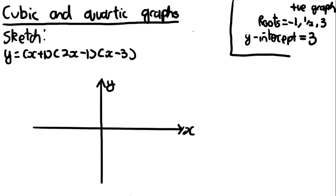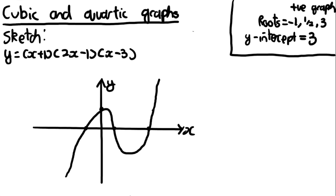Now we have all the information needed to sketch the graph: it's a positive cubic, with roots at x = −1, x = ½, and x = 3, and a y-intercept of 3. Plotting those points and drawing the positive cubic shape through them gives a reasonable sketch. The most important thing is to label everything — the roots −1, ½, and 3 on the x-axis, and the y-intercept 3.